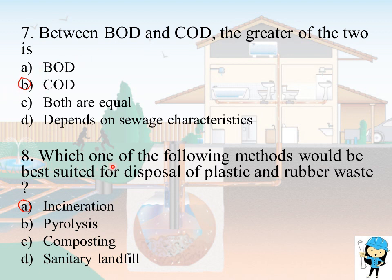Which of the following methods would be best suited for disposal of plastic and rubber waste? The answer is option A, incineration, since the other three options are open systems. Disposal of plastic and rubber waste may cause the release of toxic substances like methane. Therefore, closed system incineration is the answer.